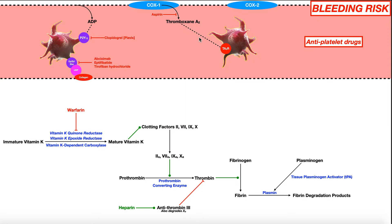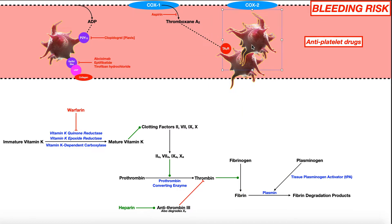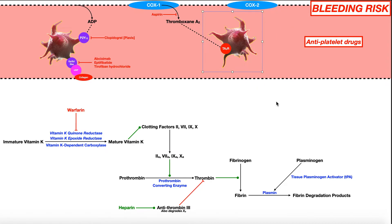These thromboxanes bind to specific receptors in the platelets — the thromboxane A2 receptor. They bind to this receptor and it causes the platelet to become what we call sticky, meaning the platelet will start adhering to the vessel wall, and then other platelets will start sticking to that platelet, basically initiating the coagulation cascade. But aspirin is an inhibitor of COX-1 only. By inhibiting COX-1, it prevents the formation of thromboxane A2, so there's nothing to bind to the receptor on the platelets and the platelets don't become as adherent — preventing platelet adhesion and aggregation.